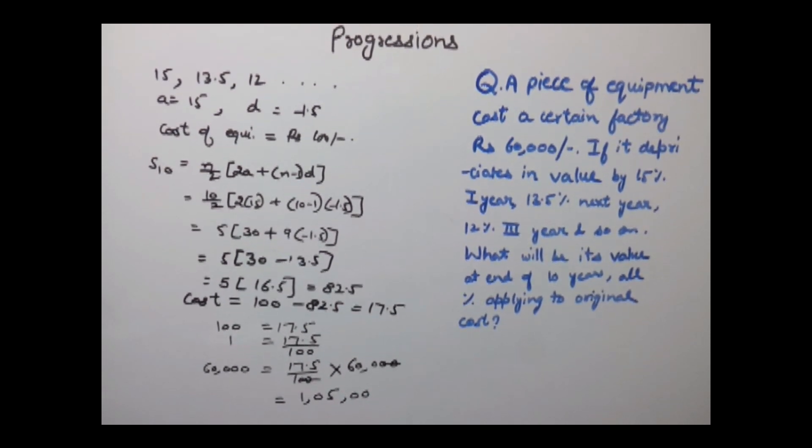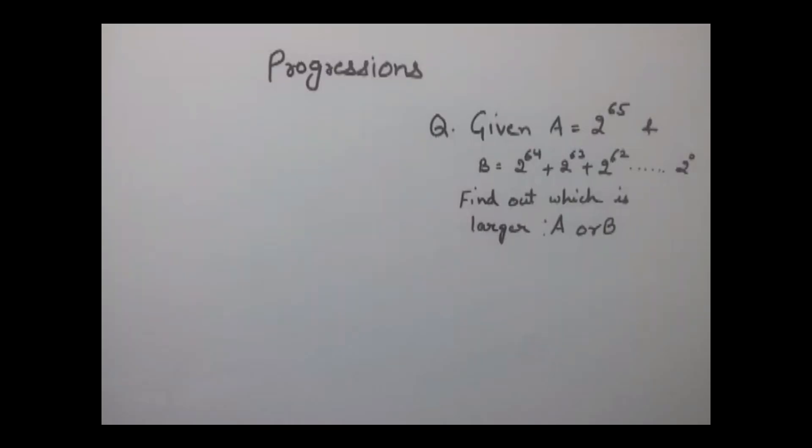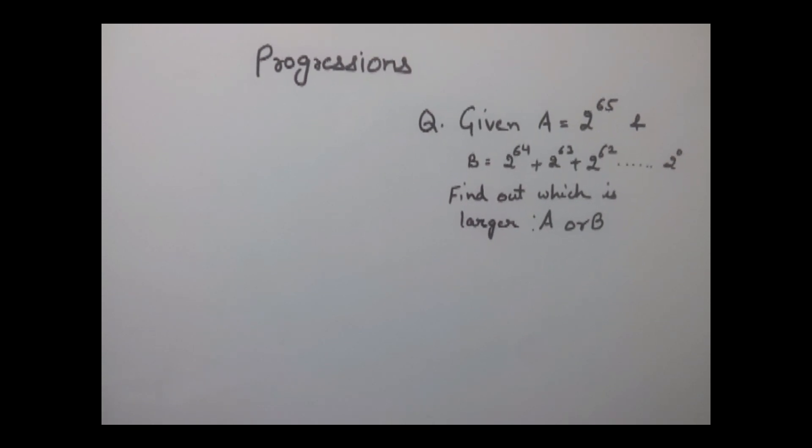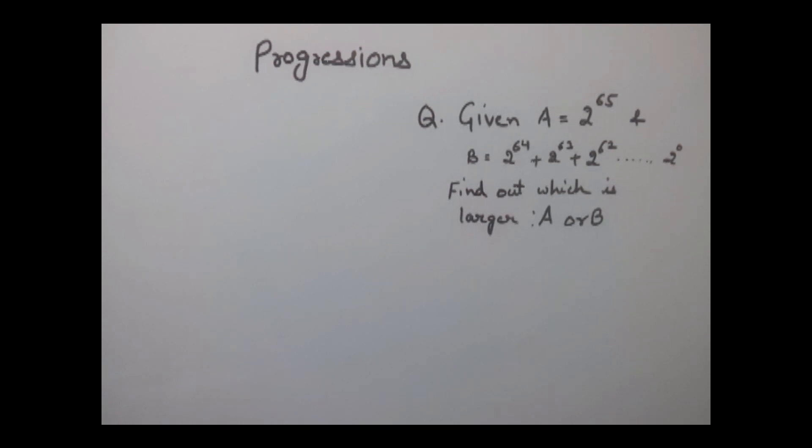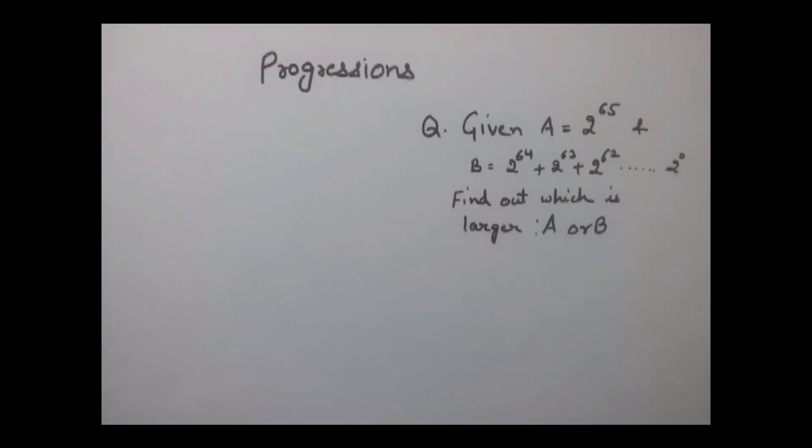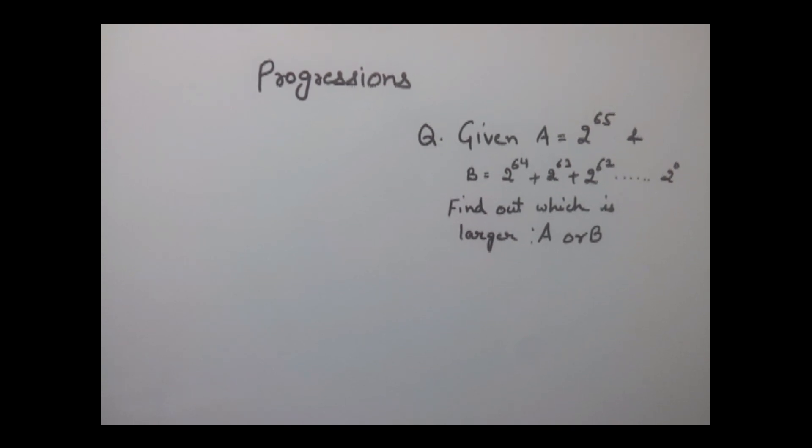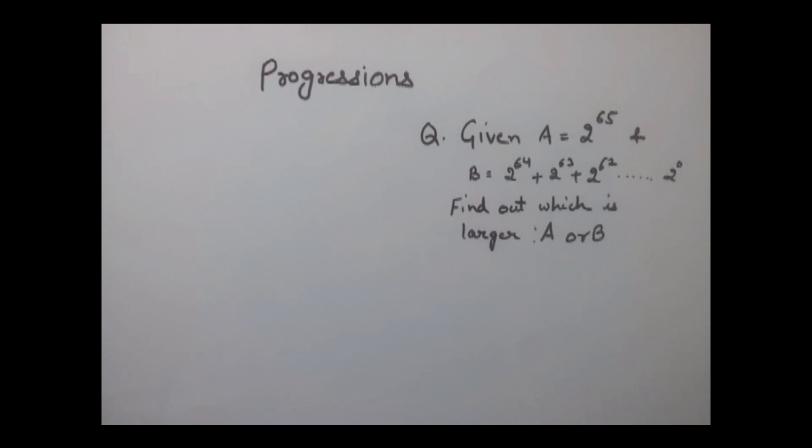Let's have one more example. Our next example is: given A is equal to 2 to the power 65, and B is equal to 2 to the power 64 plus 2 to the power 63 plus 2 to the power 62 and so on till 2 to the power 0. Find out which is larger, A or B.